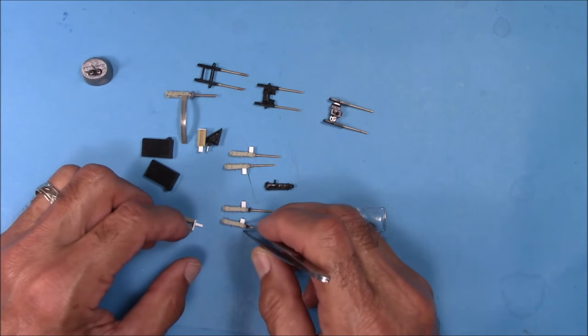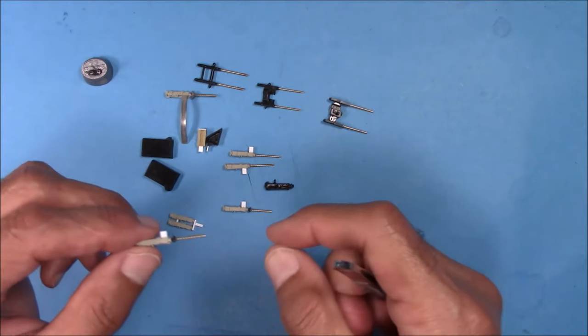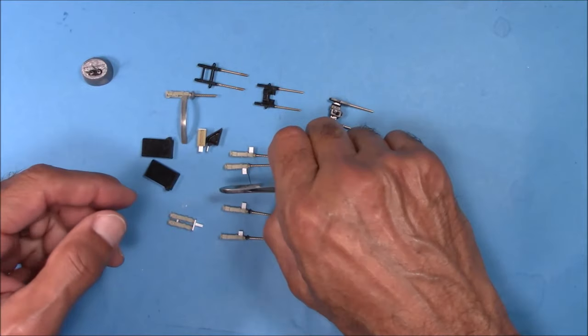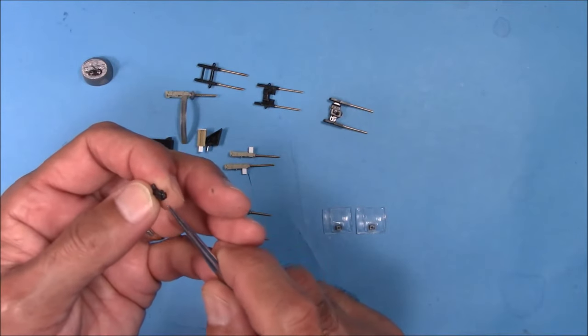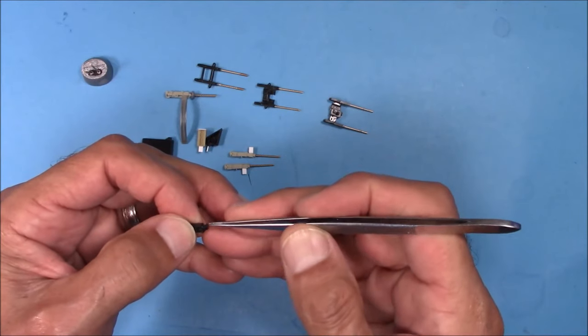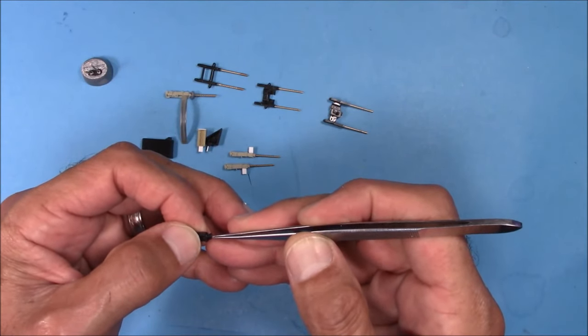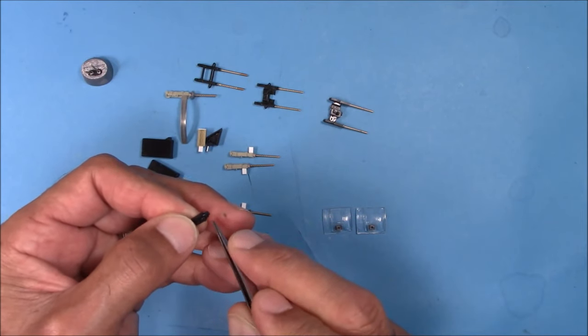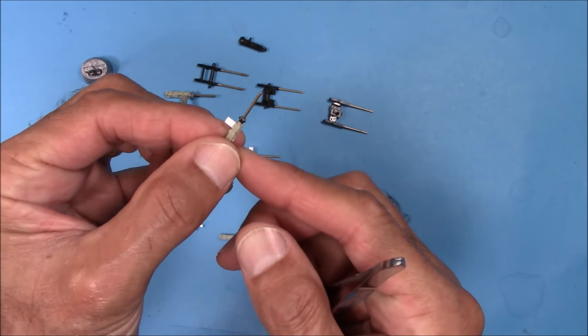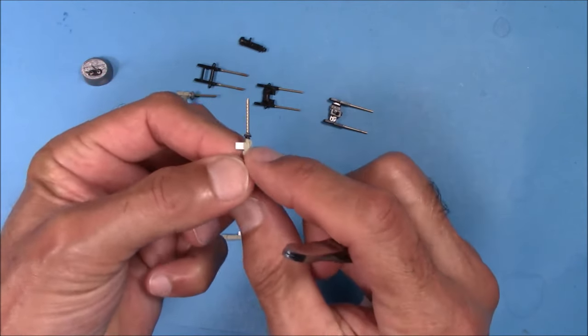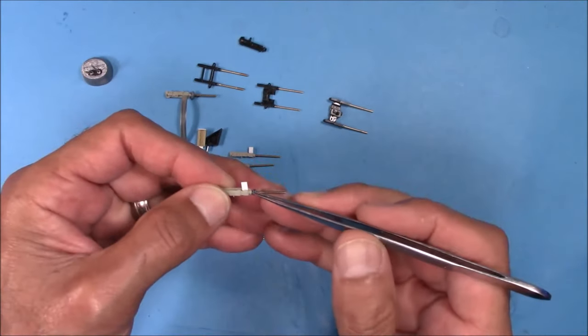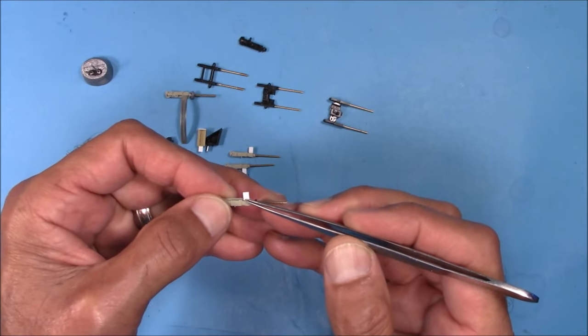On the forward .50 caliber machine guns in the nose, what I did was, I was able to cut out the ball joint here, but first I drilled it out to .041 inches in diameter and then cut it off. And then, I inserted it. So now, these will fit nicely into their openings in the nose. Now, what's this white piece here? I've got one here.